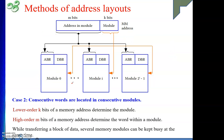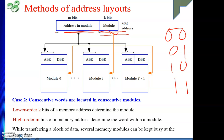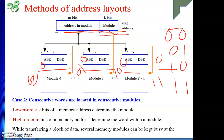In the next video we will see some numericals on interleaving. To summarize: in this arrangement module number is the lower-order bits and address is the higher-order bits, so module number changes quickly — module 0, 1, 2, 3 — and all are given address 0, so all four modules give their first byte and four data bytes come in parallel. That is the benefit — it makes operations faster. We will be solving some numericals on interleaving next, which is a very important topic. Thank you.